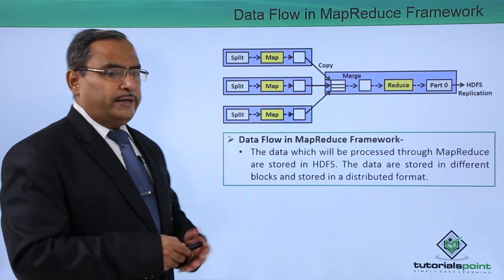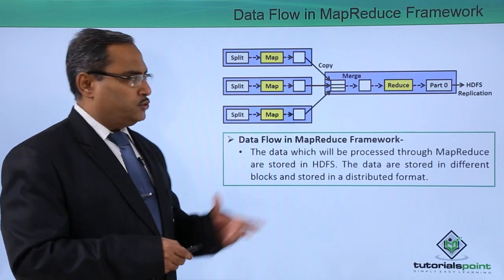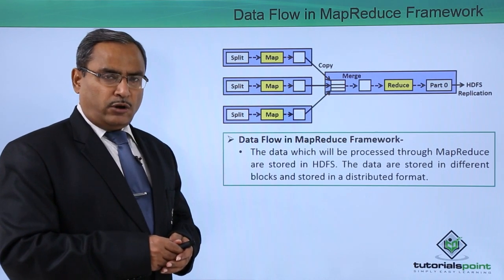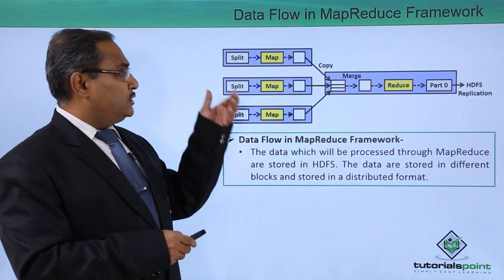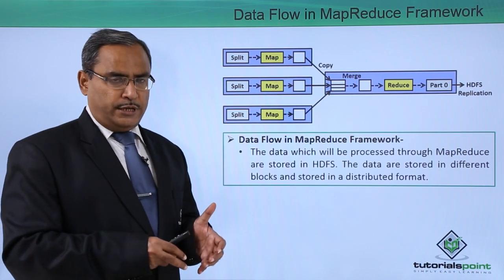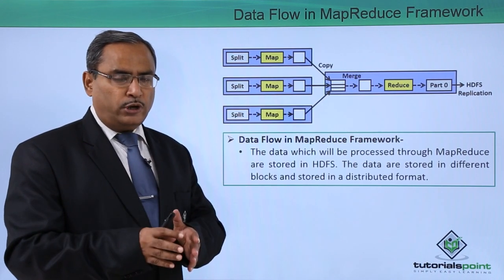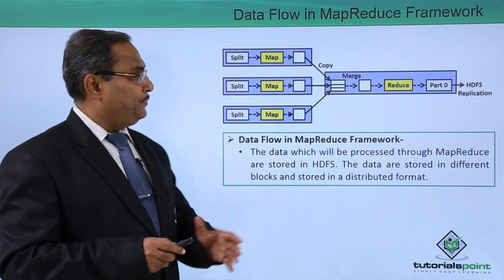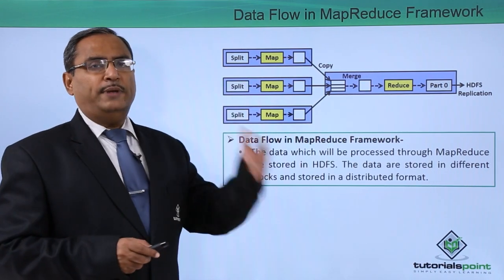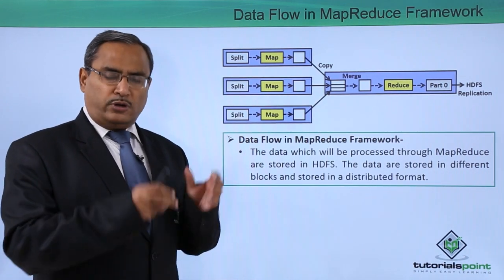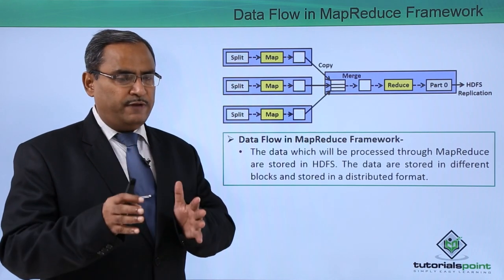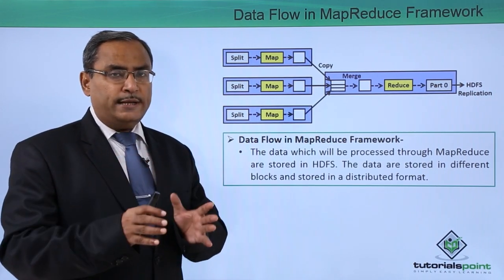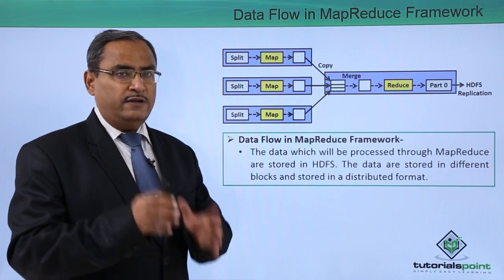Here you can find that there is one diagram. The input will be consisting of multiple different records, and those records will be split by the input split into multiple logical models which can be handled by the mapper. After this split, we will have the record reader which will convert these records into key-value pairs, because the mapper can only read and handle key-value pairs.